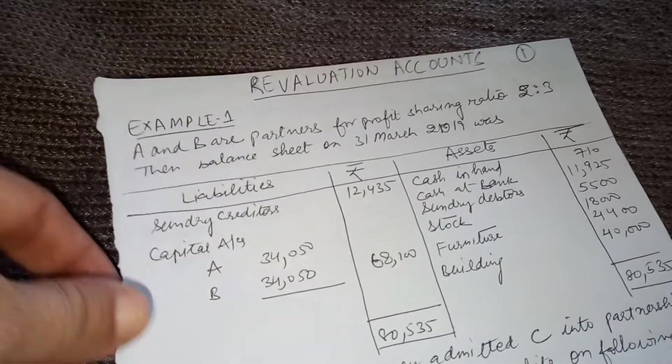Building is to be appreciated by 15,000. Since the building is 40,000, an appreciation of 15,000 means an increase of 15,000 — so building account will be debited to revaluation by 15,000, appearing on the credit side. After balancing, the difference comes to 12,485, which will be divided between previous partners A and B in their old profit sharing ratio.